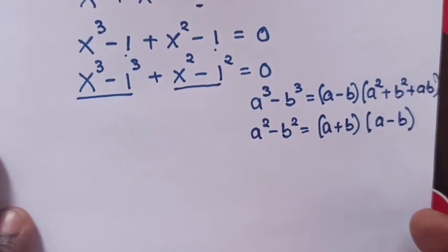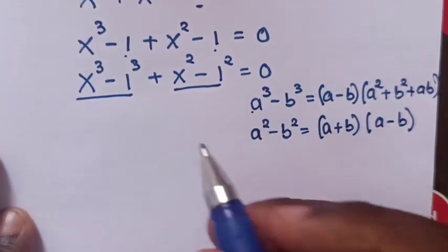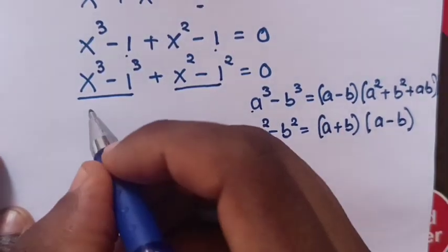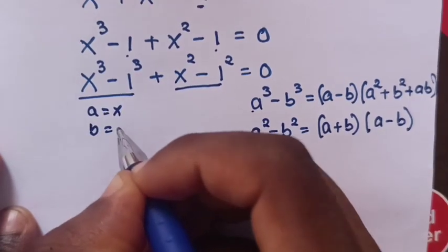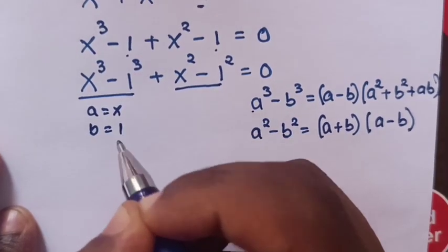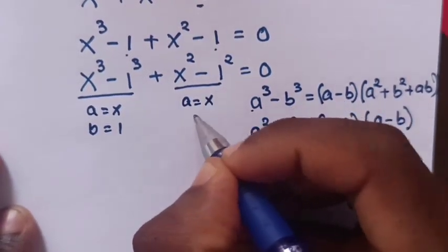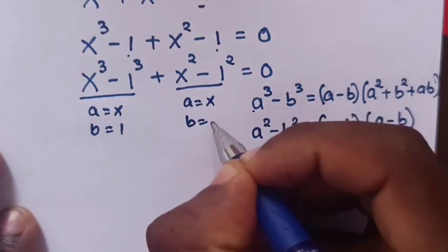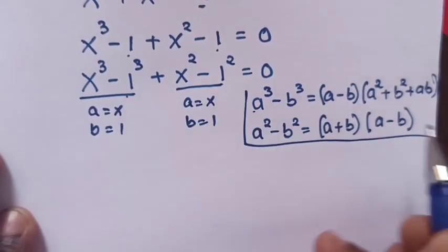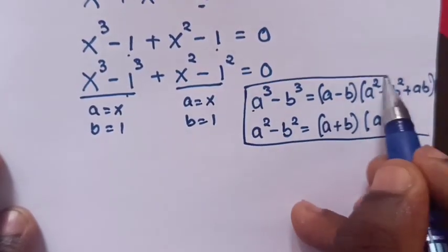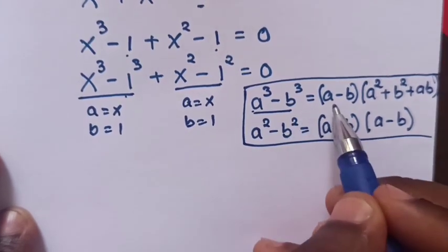Now, from the first part, a power 3 minus b power 3, a here is x and b is 1. And in the second part, a is x and b is 1. So we'll expand our equation by using this rule.